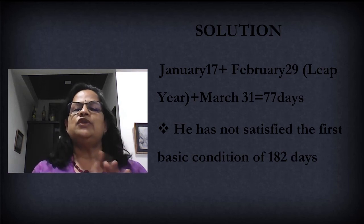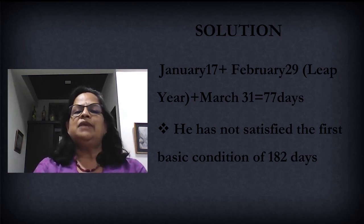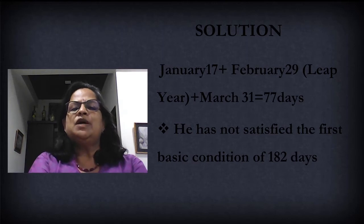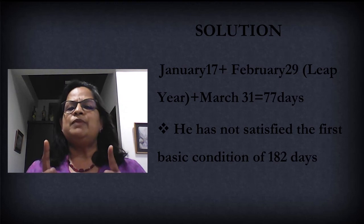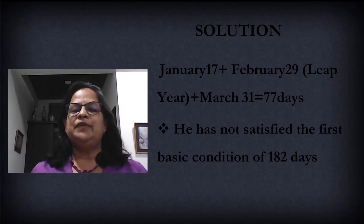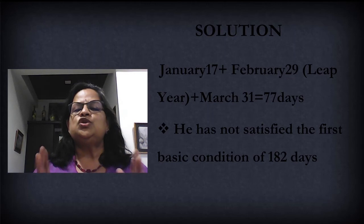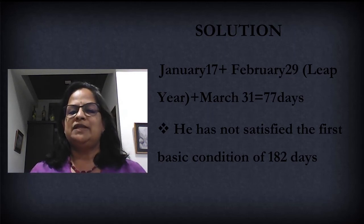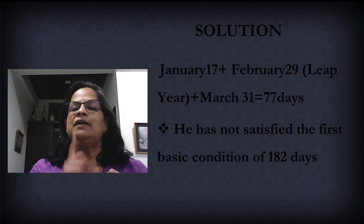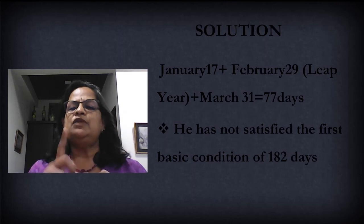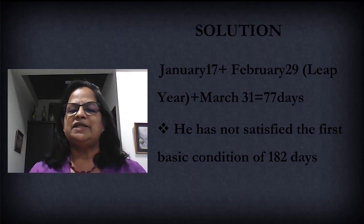One day can change the residential status of a person, so in between the month you have to count using your fingers. Day of arrival and day of leaving will both be counted — that is very important. February we are taking 29 days because it's a leap year, then March 31. Totally you are getting 77 days. The first basic condition is he should have been in India for 182 days or more in the relevant previous year. He was here only for 77 days, so he has not satisfied the first basic condition.